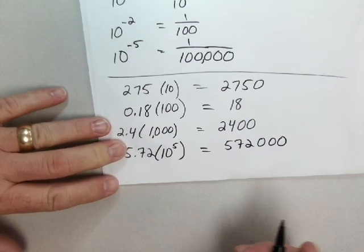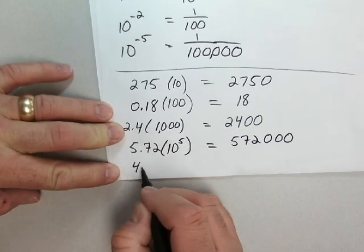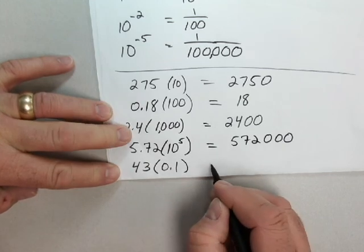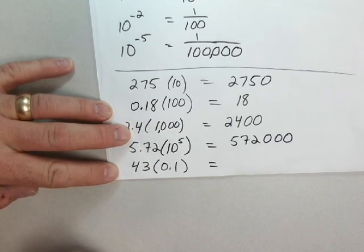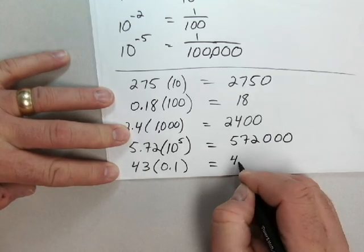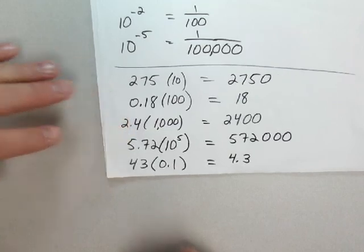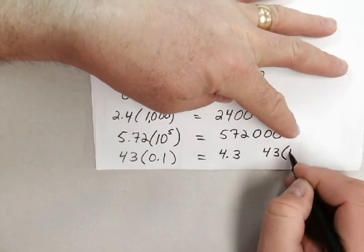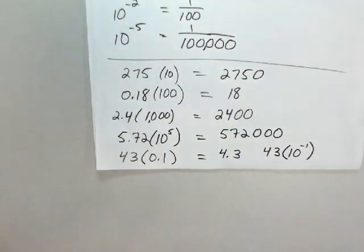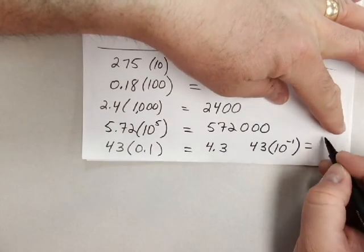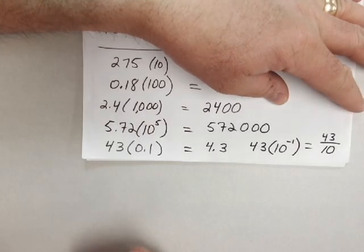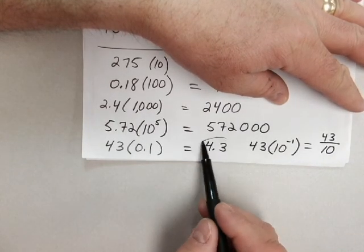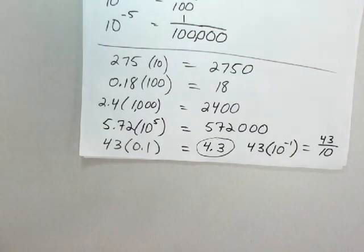We can just take that 5.72 and tack five decimal shifts onto it, because I'm multiplying by five powers of 10. So the first two decimal shifts gets me past the two, so 572 add three zeros. What about these negative exponents here? What if I have 43 times 0.1? Well, I know if I'm multiplying by 0.1, I'm just moving the decimal one place to the left, so it becomes 4.3.